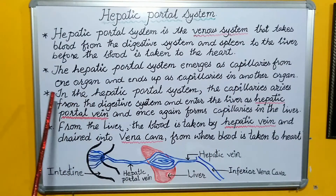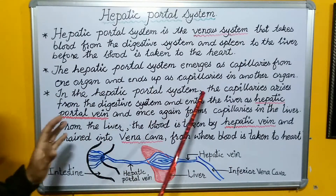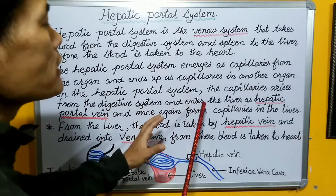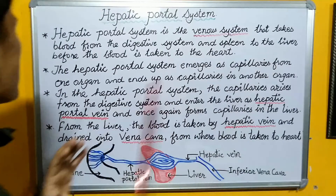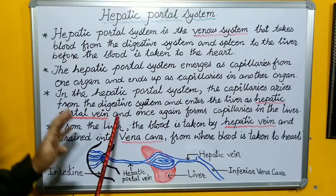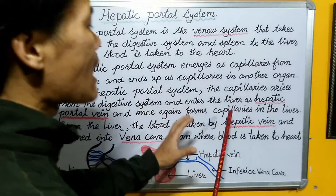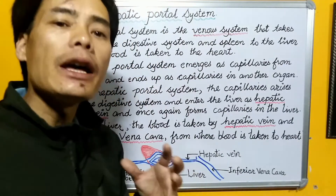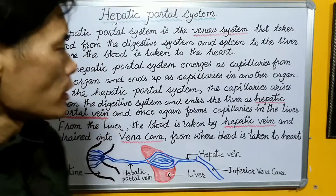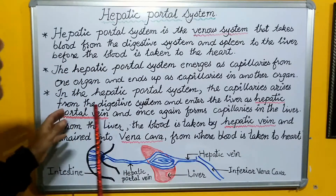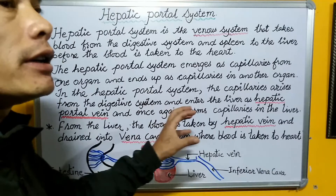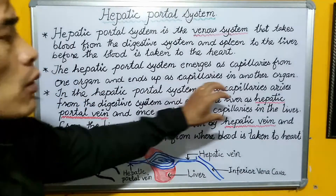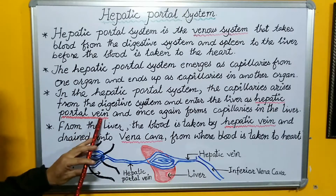In the hepatic portal system, the capillaries arise from the digestive system and enter the liver as the hepatic portal vein, and once again form capillaries in the liver. These capillaries from the digestive system unite to form a portal vein.